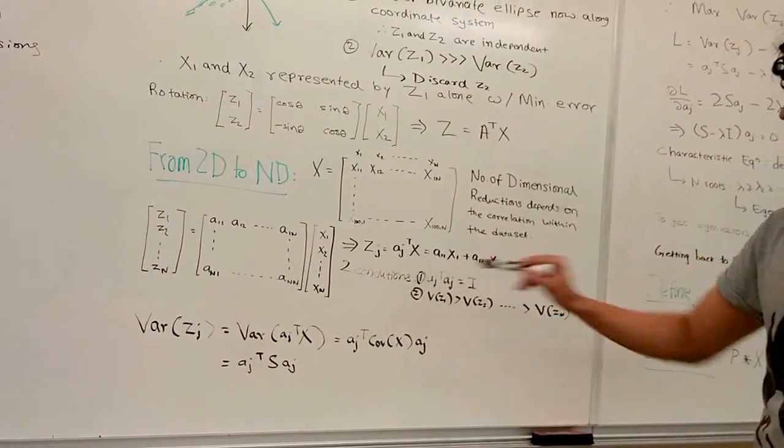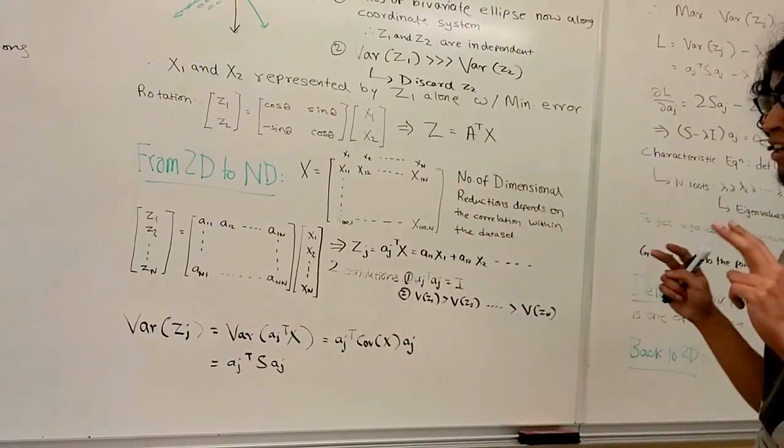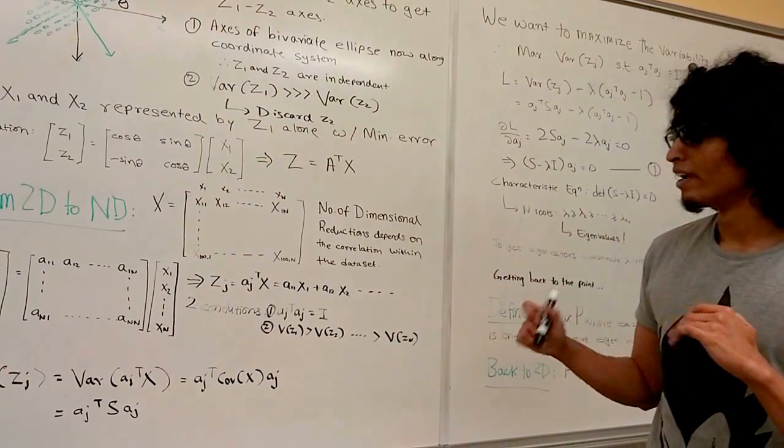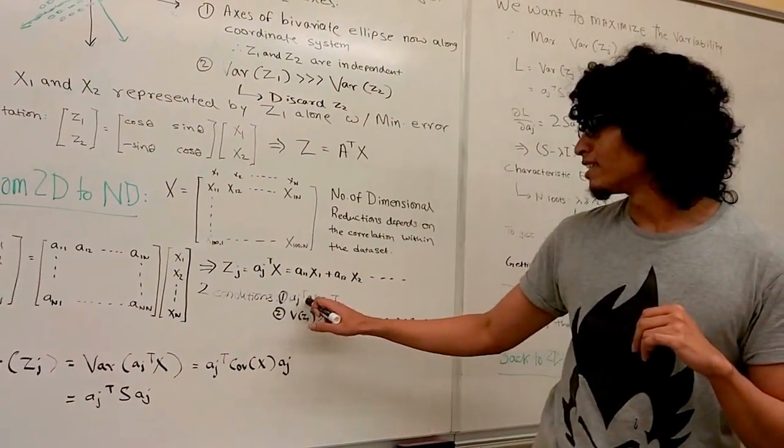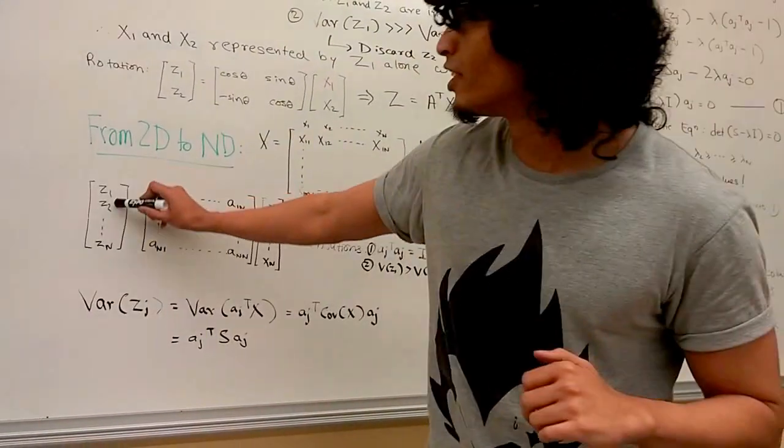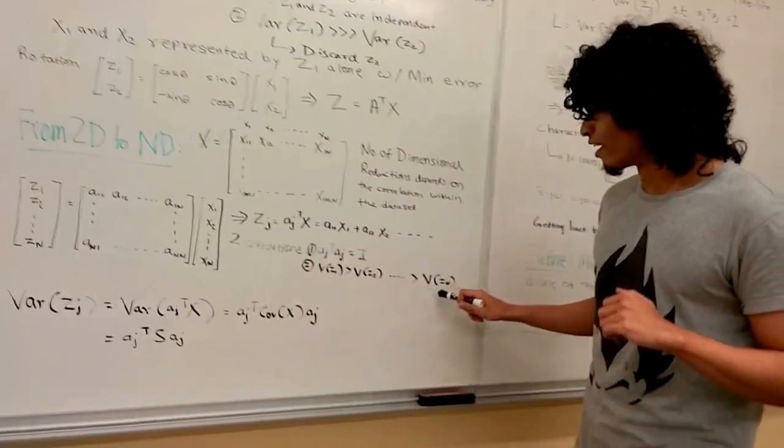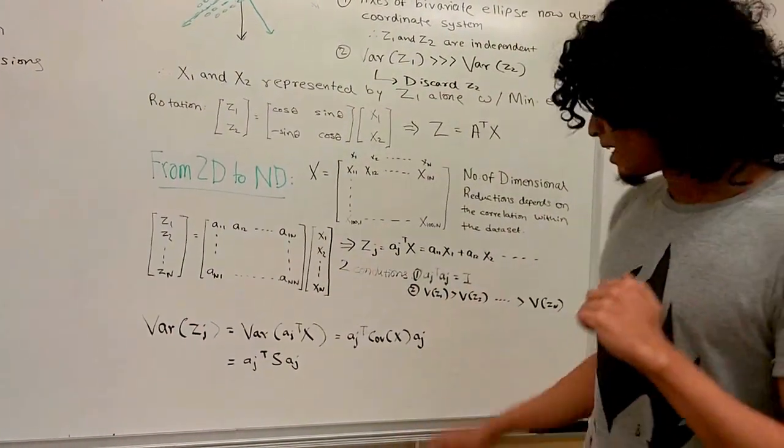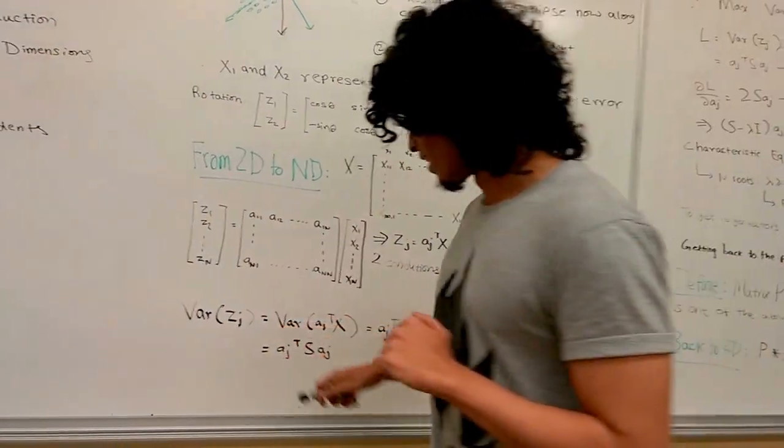This faces two conditions. To be able to reduce the number of dimensions in an optimal way, we need to have our basis vectors be orthogonal. And we want our variability on each new axis to be in a descending order. Eventually, we want to discard some of these. But let's compute the variability of one of the axes now.